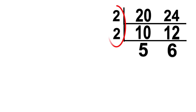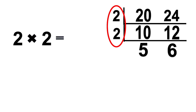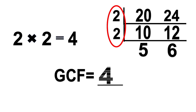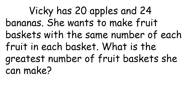Next, multiply the prime divisors. We have 2 times 2 equals 4. So, the greatest common factor is 4. The greatest number of fruit baskets she can make is 4.